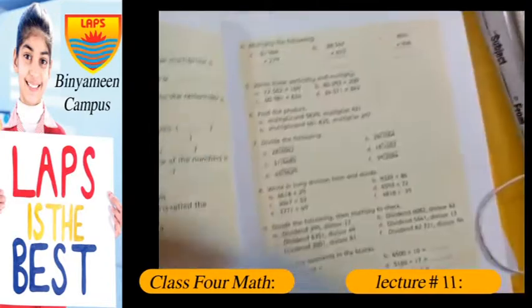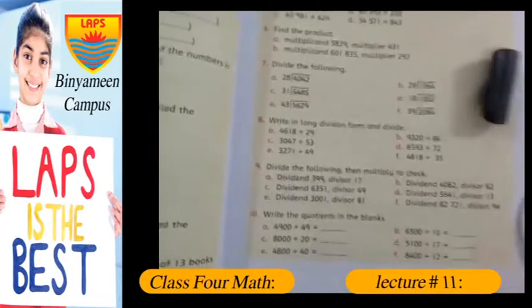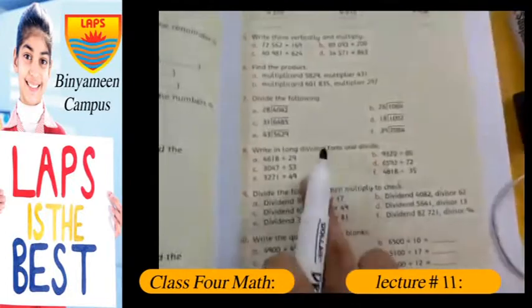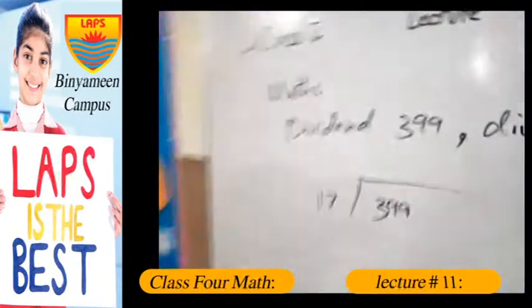So open your books and I will be solving the very first question and the rest of it is going to come up. The dividend is 399 and divisor is 17. I have written this question here.